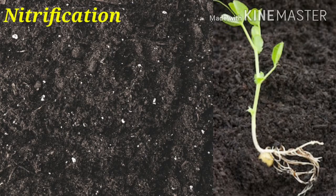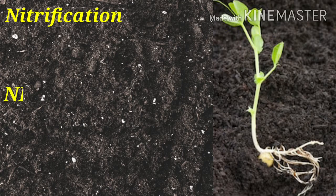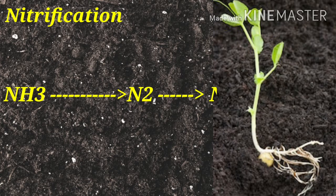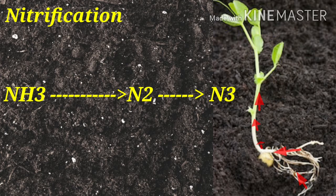Nitrification: Ammonia in the soil is converted into nitrite, which is then converted into nitrate by nitrifying bacteria. This process is known as nitrification. Compounds of nitrogen like ammonia, nitrate, and nitrite are readily absorbed and utilized by plants.